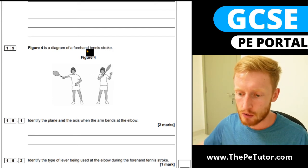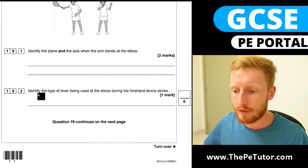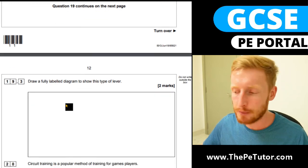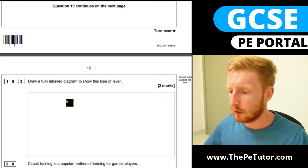So looking at this forehand tennis stroke and we're looking to identify the type of lever being used at the elbow and then at the end what we'll do is look at how to label not just this lever but all three of them.